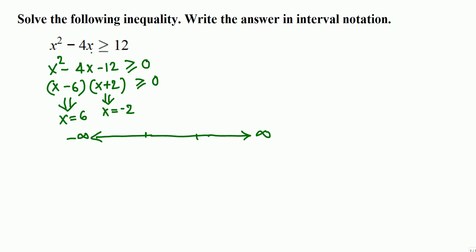We are solving this inequality for bigger than or equal to, so we make a dot. This is negative 2 and this is 6, dot. When we write the solution later we have to use bracket. That's the dot.